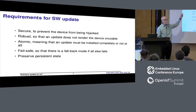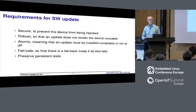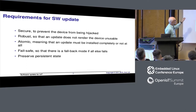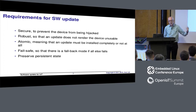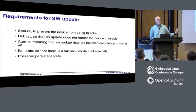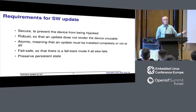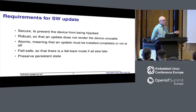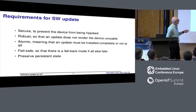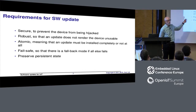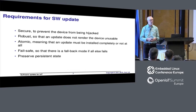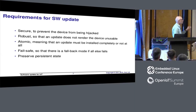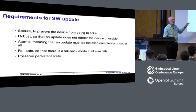Robust — we don't want an update to brick the device. Atomic: by atomic, in this context, I mean that you either apply the update or you don't. It shouldn't be possible to have a system which is halfway updated and then reboots and fails to work. Fail-safe: even if things do go wrong, we want to be able to recover and get back to at least a minimal working system. And the update itself needs to preserve the persistent state of the device.